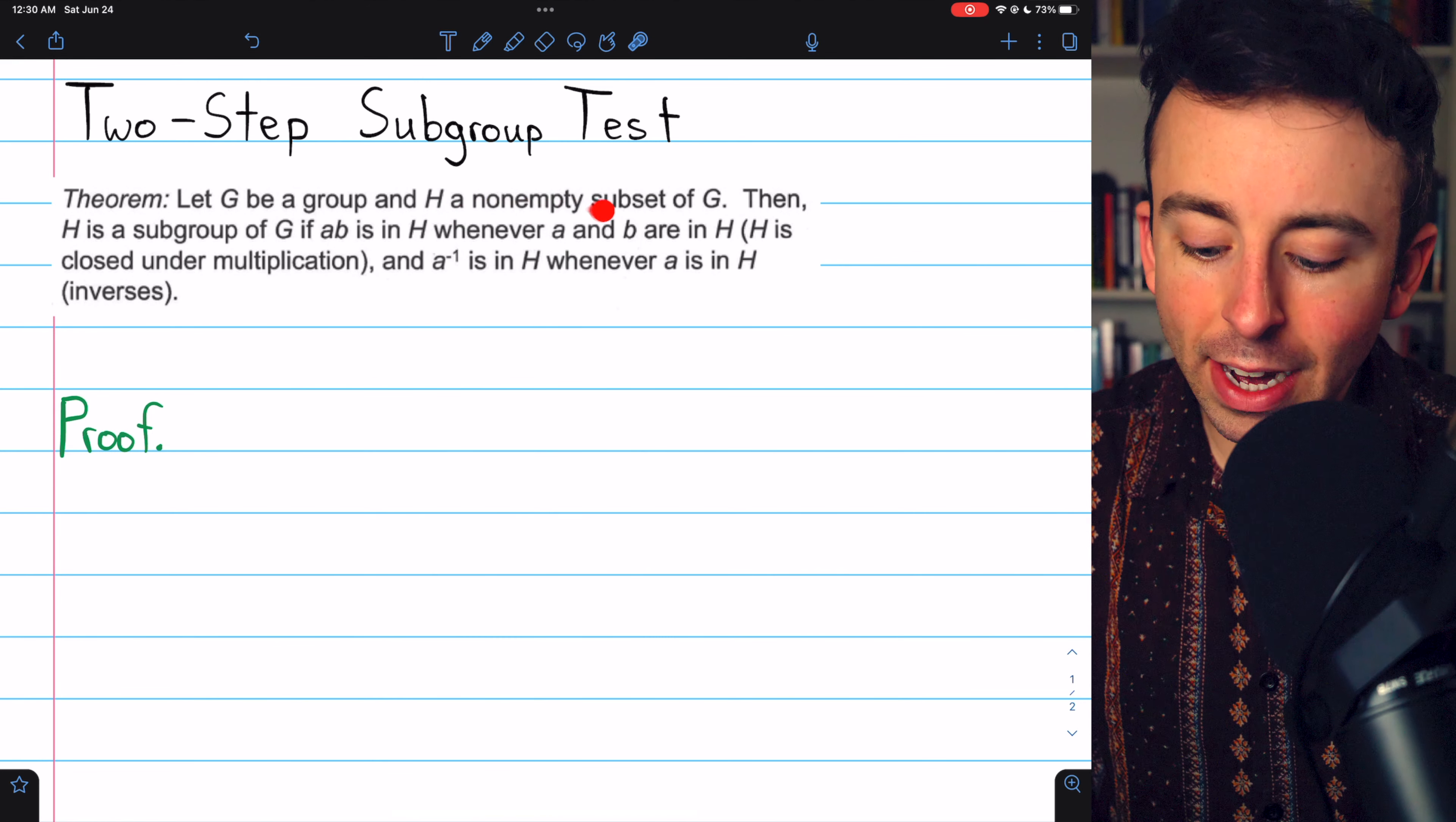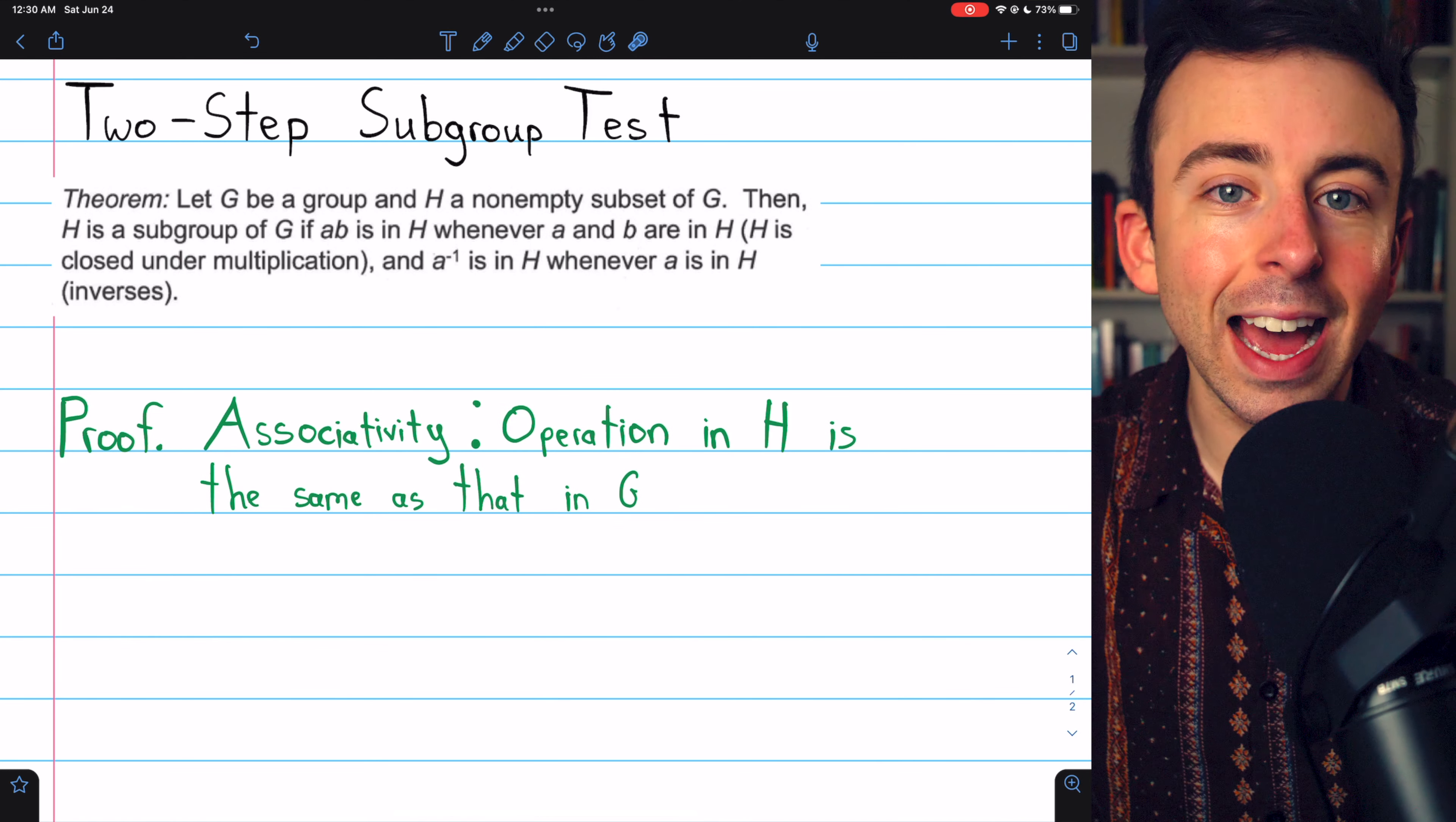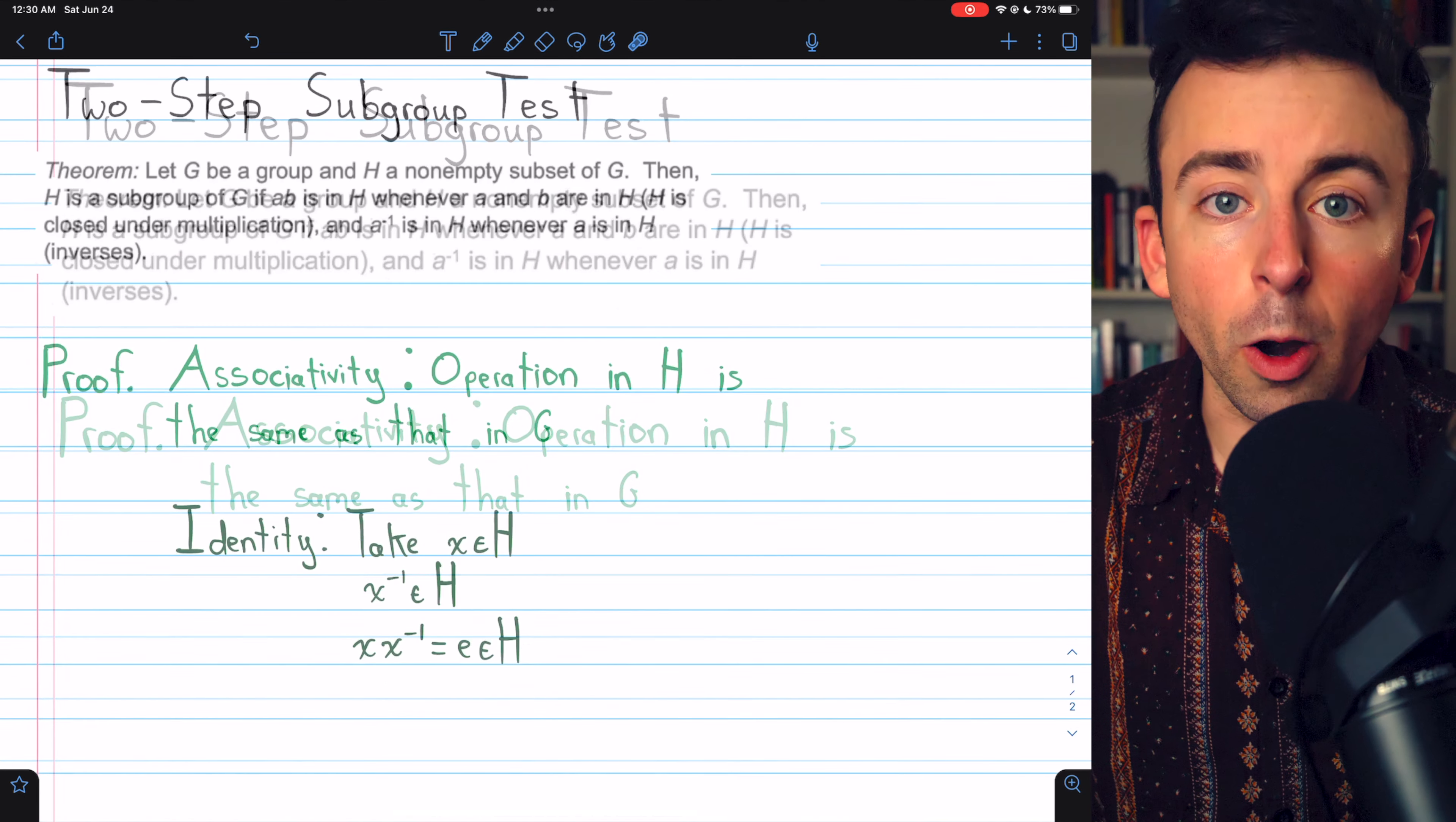We're assuming that H is a non-empty subset of our group G, so right off the bat, that guarantees we have associativity. The operation in H is the same as that in G. G is a group, so it's associative.